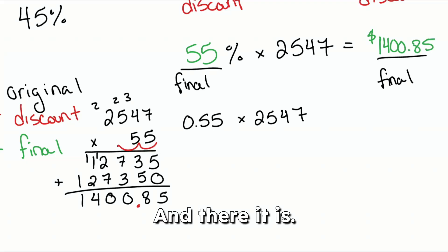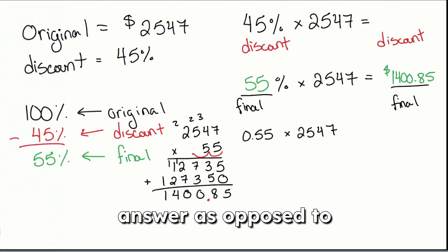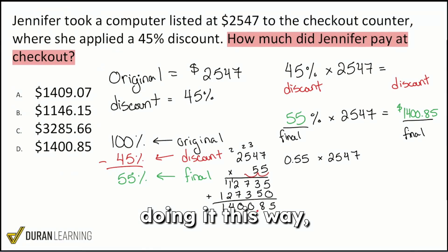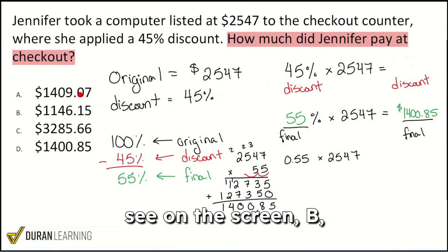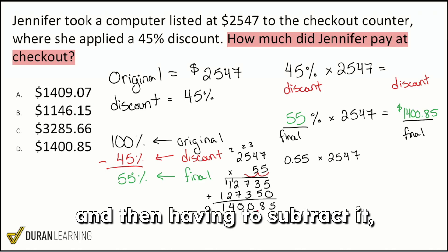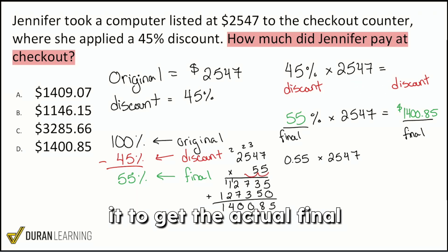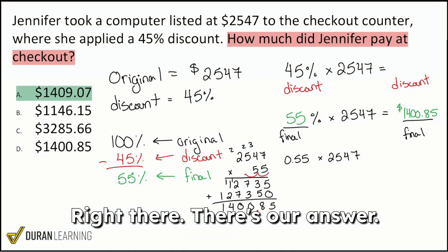In one calculation, we're able to get the final answer, as opposed to doing it the other way — getting a number that represents the discount, which you might see as answer choice B, and then having to remember to subtract it to get the actual final answer. So the correct answer is A.